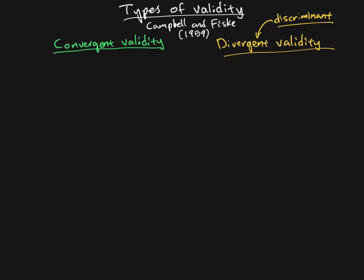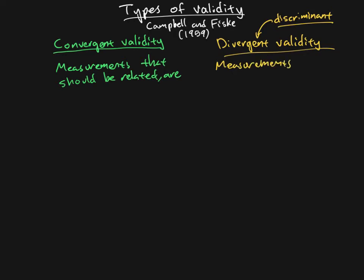With convergent validity, the idea is that measurements that should be related are, in fact, related. And the flip side of that — for divergent validity — is that measurements that should not be related aren't related.